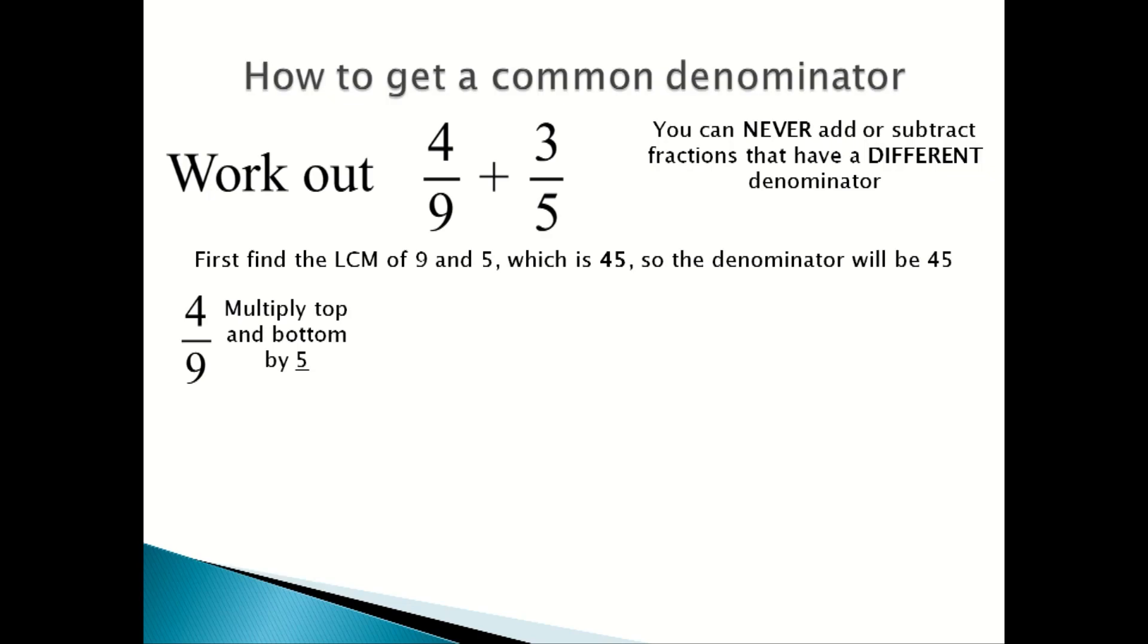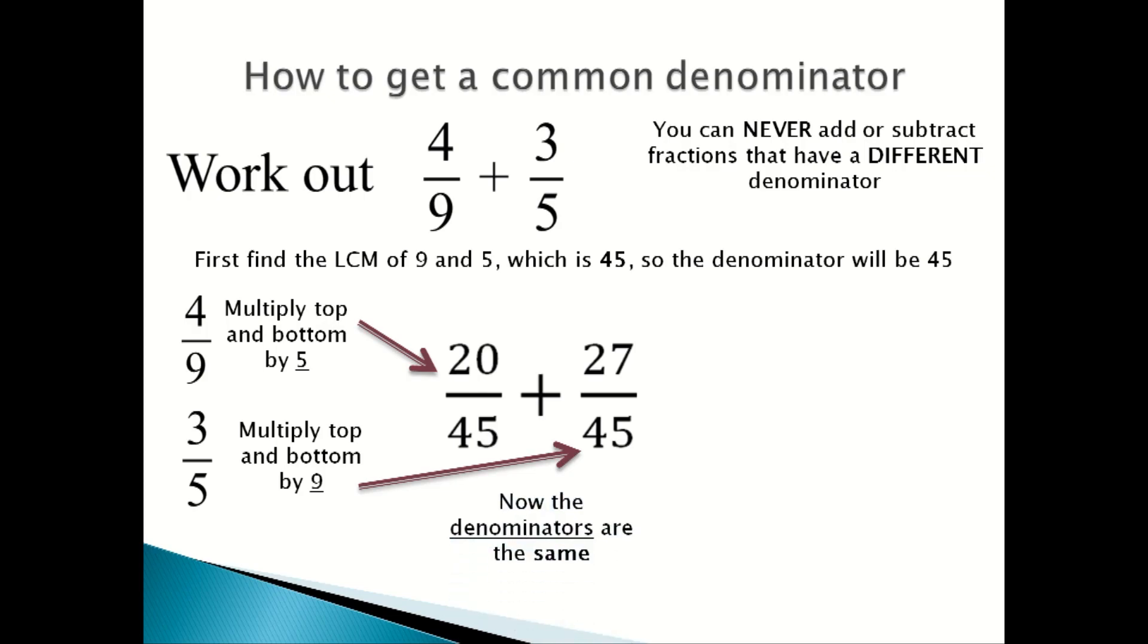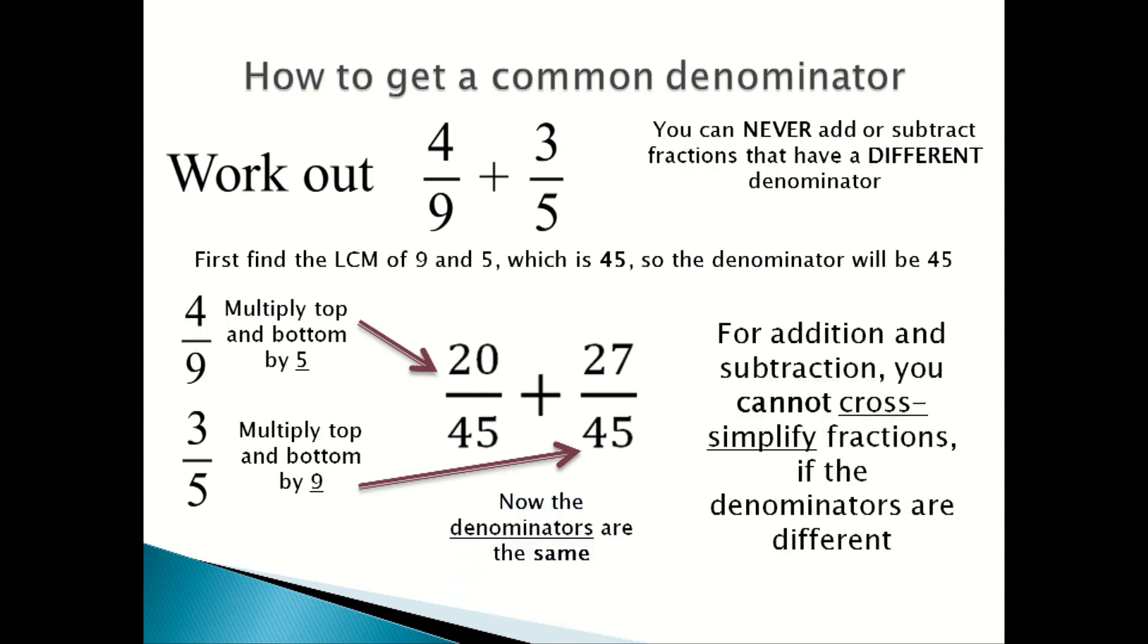For 4/9, you multiply the top and bottom by 5, and then for 3/5, you multiply the top and bottom by 9. 4/9 becomes 20/45, and 3/5 becomes 27/45. Then you add them together since the denominators are the same, and then you will get your answer.